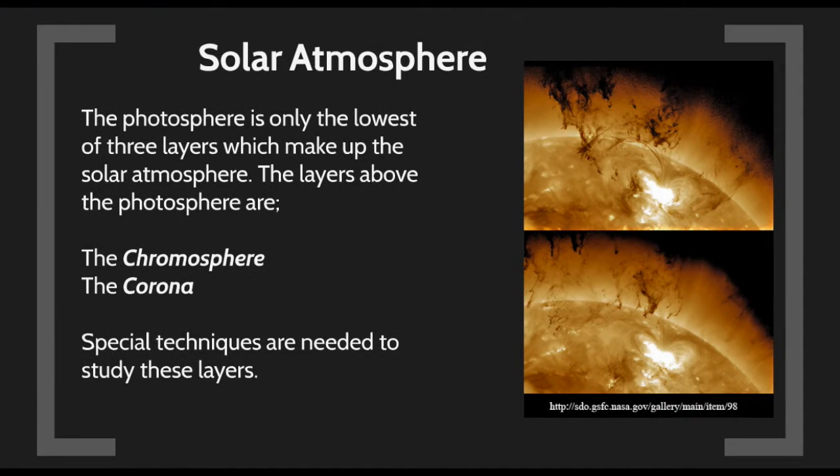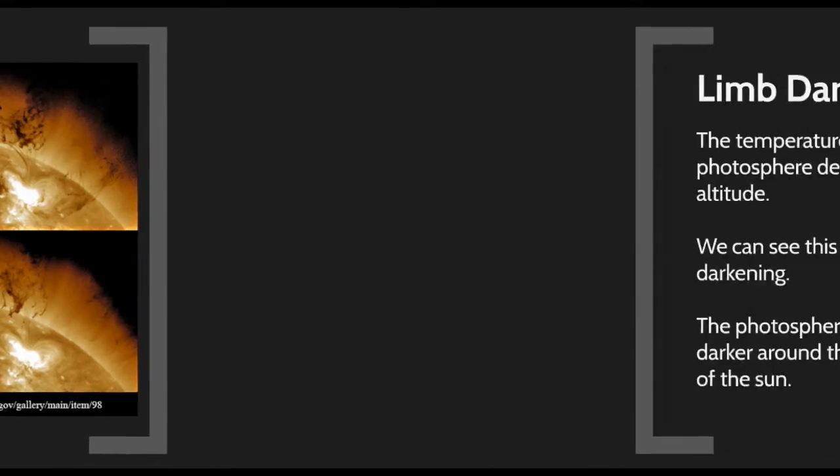Everything below the photosphere is called the solar interior. Just like Earth has an atmosphere, the Sun, being a large ball of gas, has a couple more layers above the photosphere. One is called the chromosphere, and the other is called the corona. We will need special techniques to study those layers.